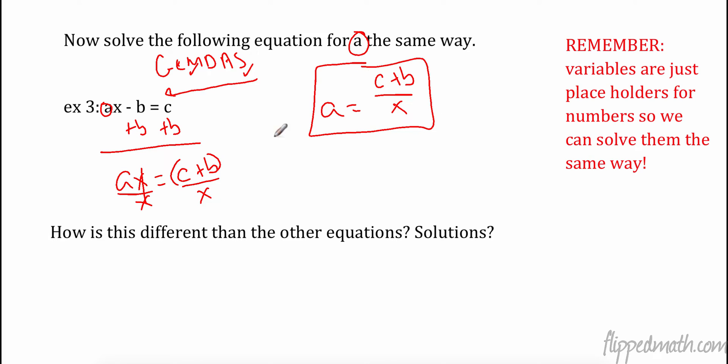So this is kind of cool because now we can solve for anything in our variables. We have it solved for C already, we could solve it for B. How is this different than other equations, other solutions? Well, this gives us a myriad of possible answers. Maybe we have a formula, and if we solve it for A, we can plug in values for C, B, and X, and it'll be much easier to do. Remember, variables are just placeholders for numbers, so we can solve them the same way. Set it up, get the variable we want to solve for by itself, and we're done.